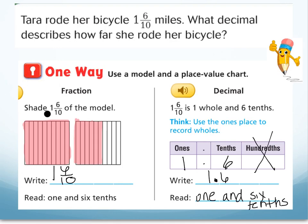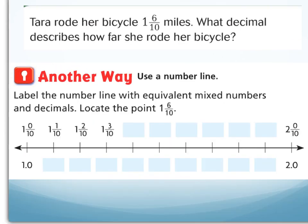Notice I say 'and' at the decimal point. Can you find one and six tenths on this number line? Since the number line is cut into ten pieces, each mark represents tenths: one and zero tenths, one and one tenths, two tenths, three tenths, four tenths, five tenths, six tenths — showing me this is one and six tenths.